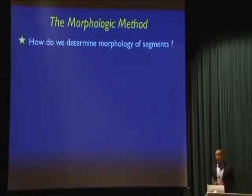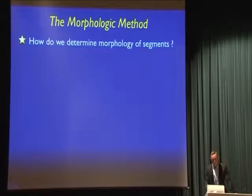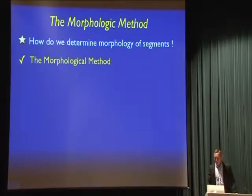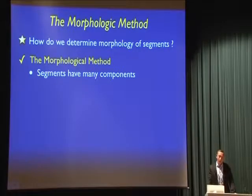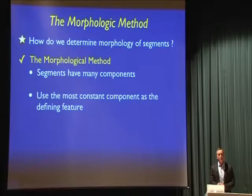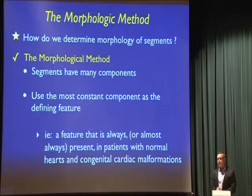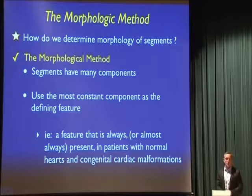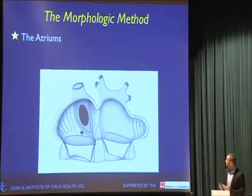The question is how do we determine the morphology of each of those segments? How do we know that a left ventricle is a left ventricle, regardless of its position within the chest? The method we use is called the morphologic method. Most of those segments have many component parts — for instance, the ventricles have an inlet, an outlet, and an apical component. The most logical thing to do is to use the component which is present in most people as the defining feature. We use a feature that's almost always going to be present in patients, both with congenital heart disease and in normally connected hearts.